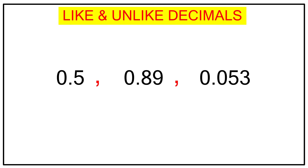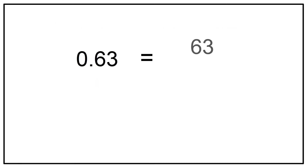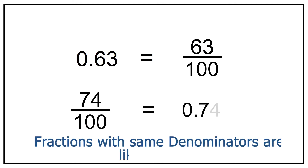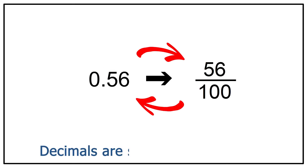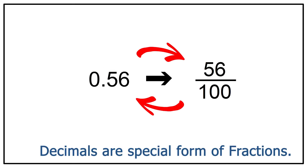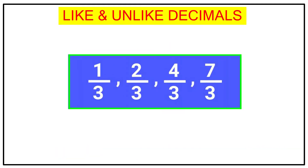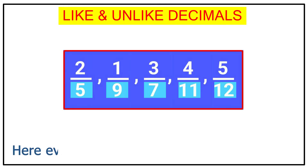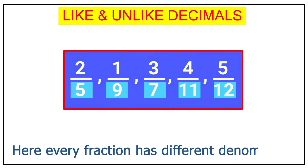I would like to connect this to my previous chapter on fractions. If you go back to fractions and see what are like fractions and unlike fractions — I am doing this comparison because decimals are related to fractions. They are a special type of fractions which have denominators of ten, hundred, and thousand. In fractions, all numbers with the same denominator are known as like fractions, whereas if the denominators are different, they are known as unlike fractions.